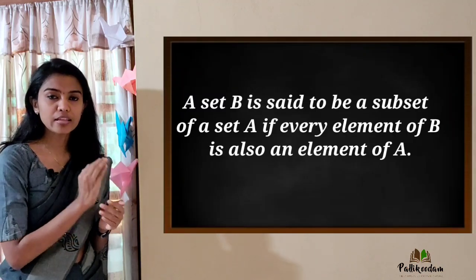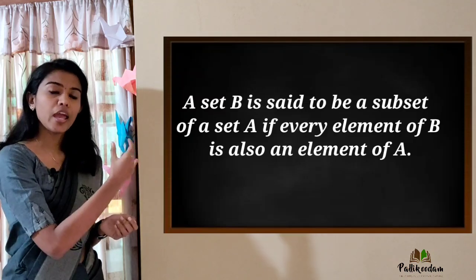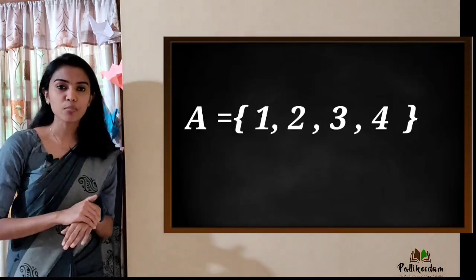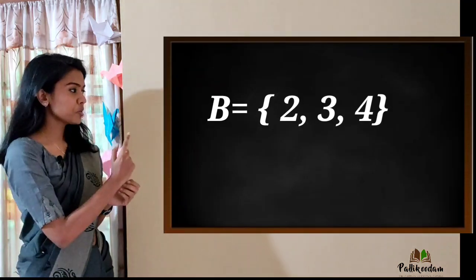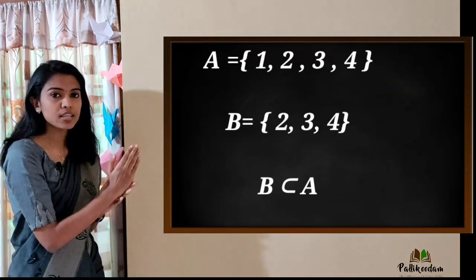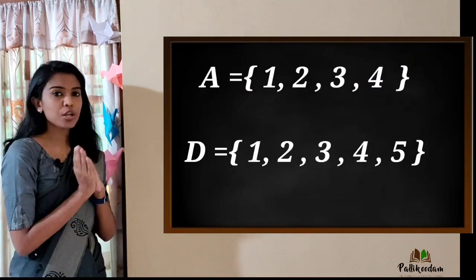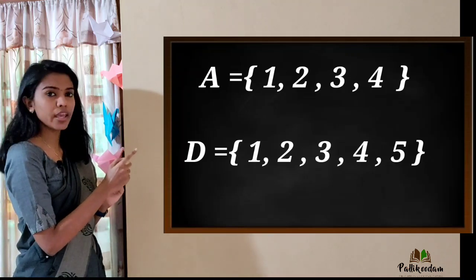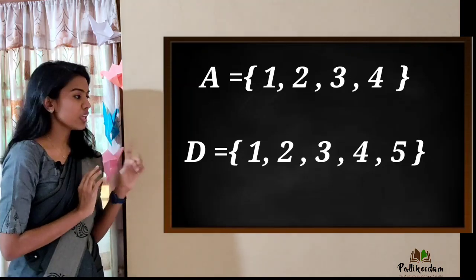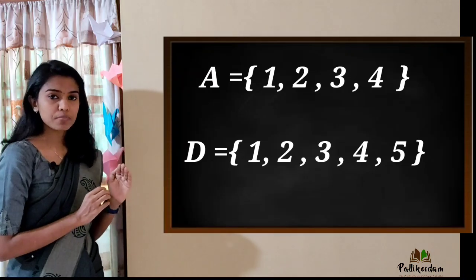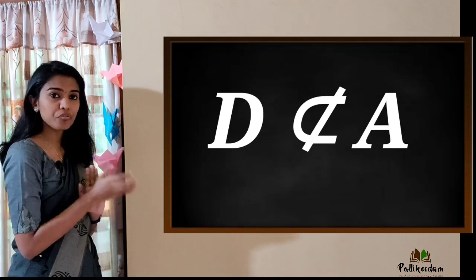If you have students in a class, you use the school as the larger set. If B is the set of students in class, then B is a subset of A. For example, A = {1, 2, 3, 4} and B = {2, 3, 4}. Then B is a subset of A. Now if D = {1, 2, 3, 4, 5}, then D is not a subset of A.